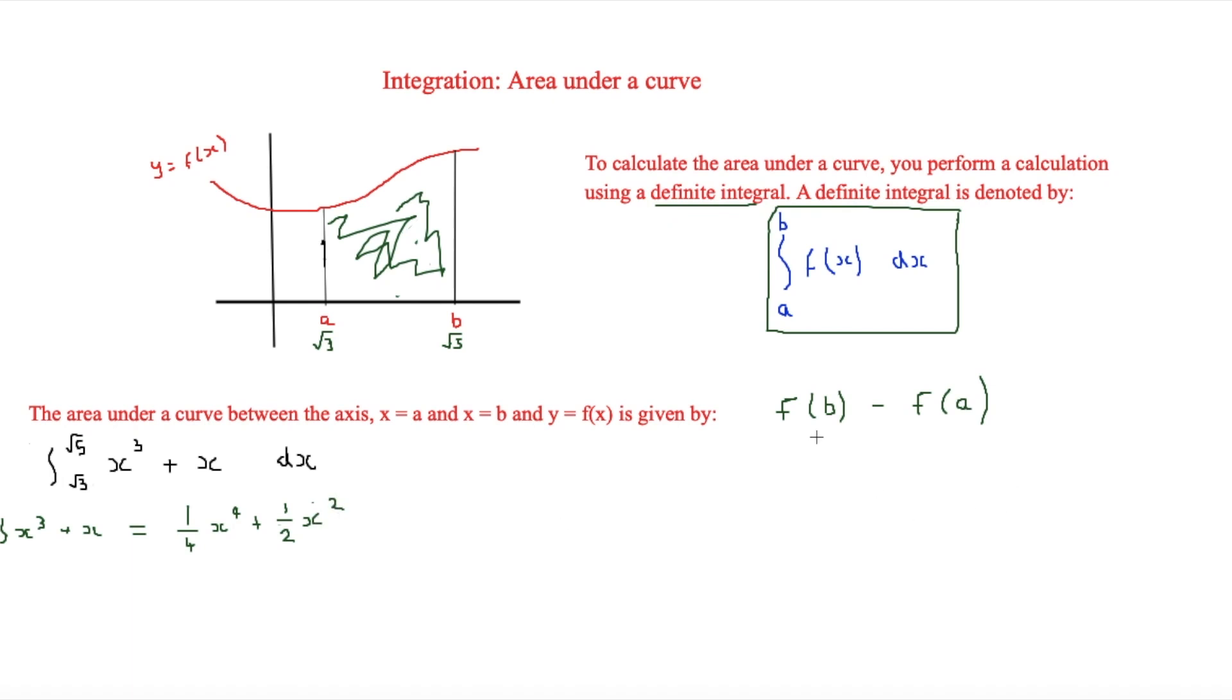Now this is where this comes in, f of b minus f of a, as now we have to do some substitution. And we've already established that root 5 is b and root 3 is a. And we're just going to sub in b for x, each time in a for x, and then do b minus a.